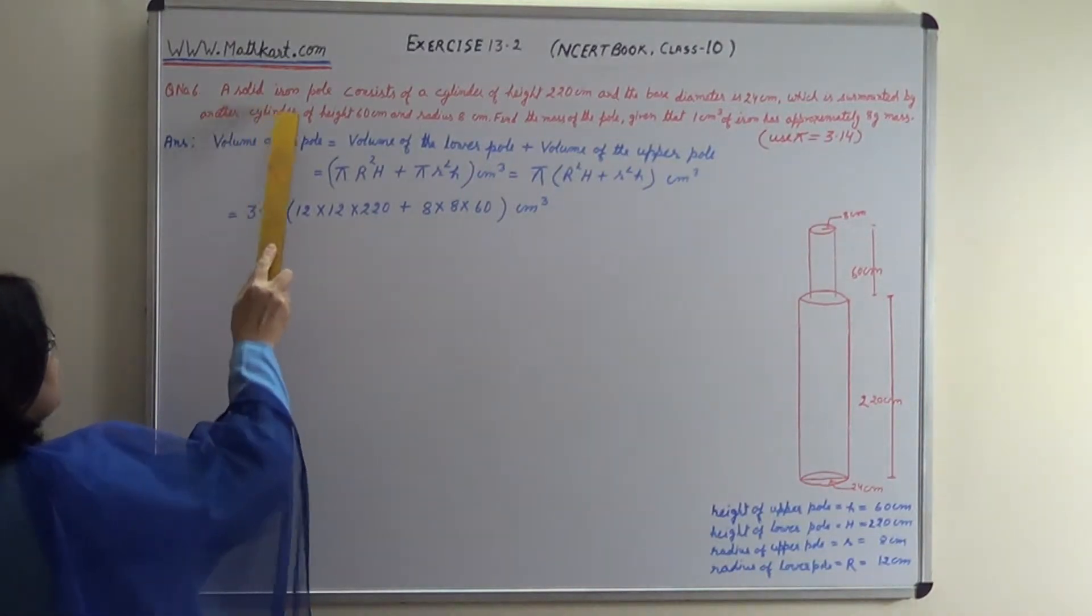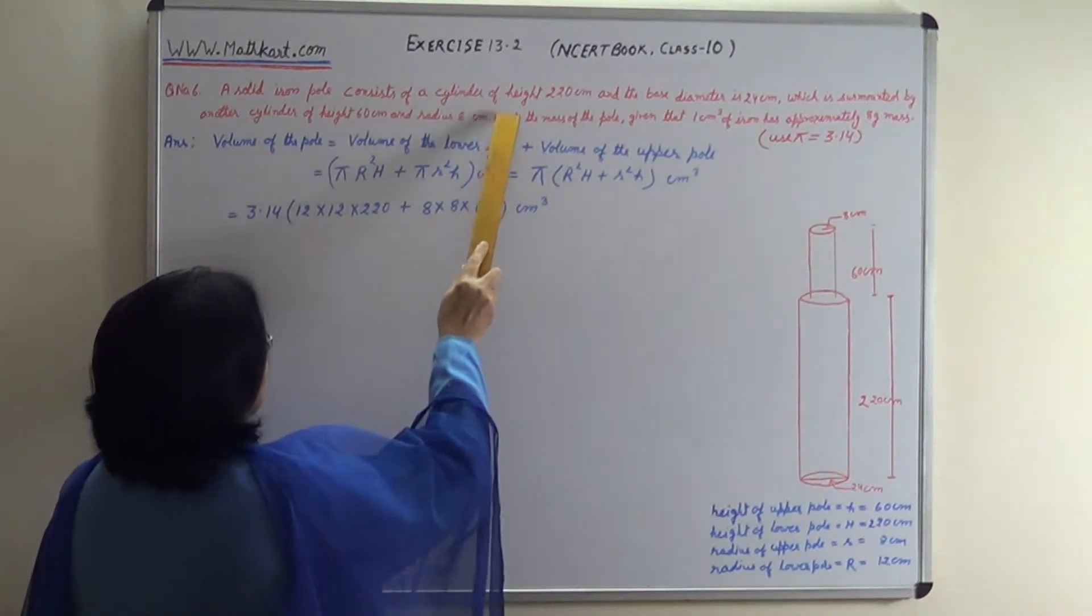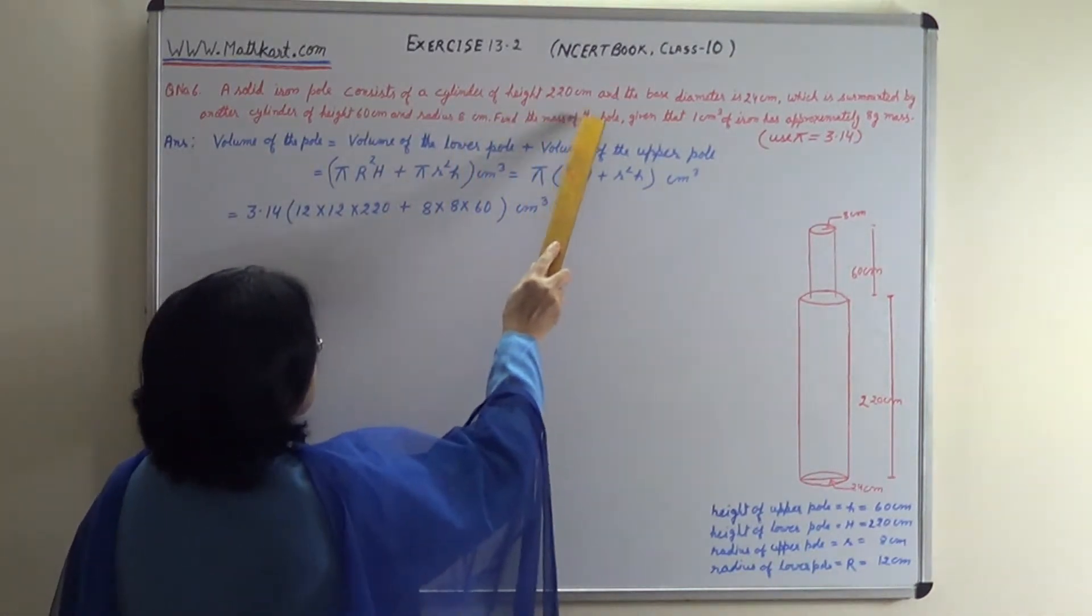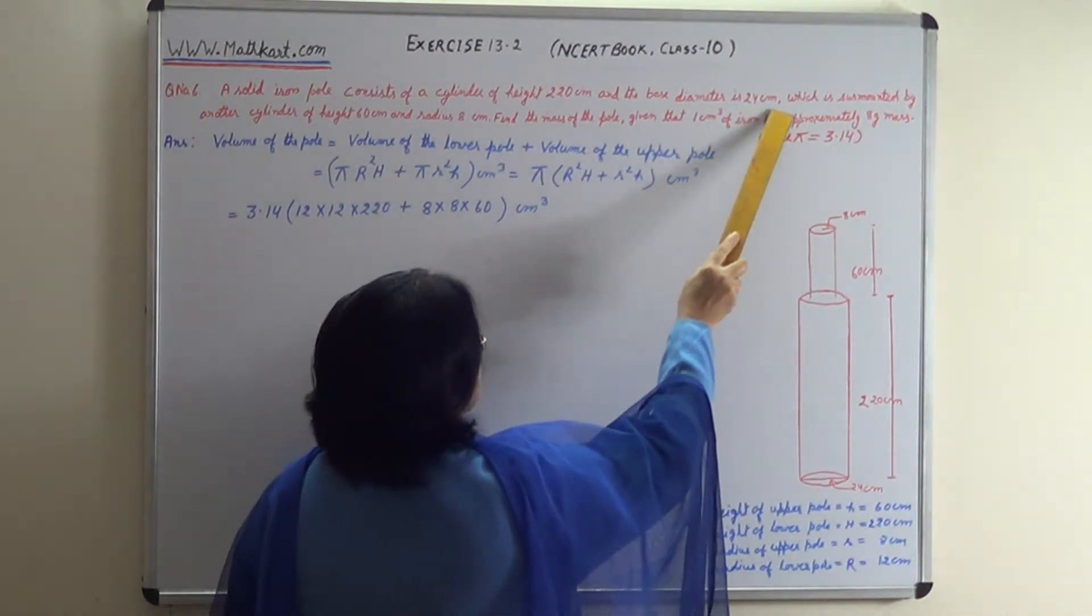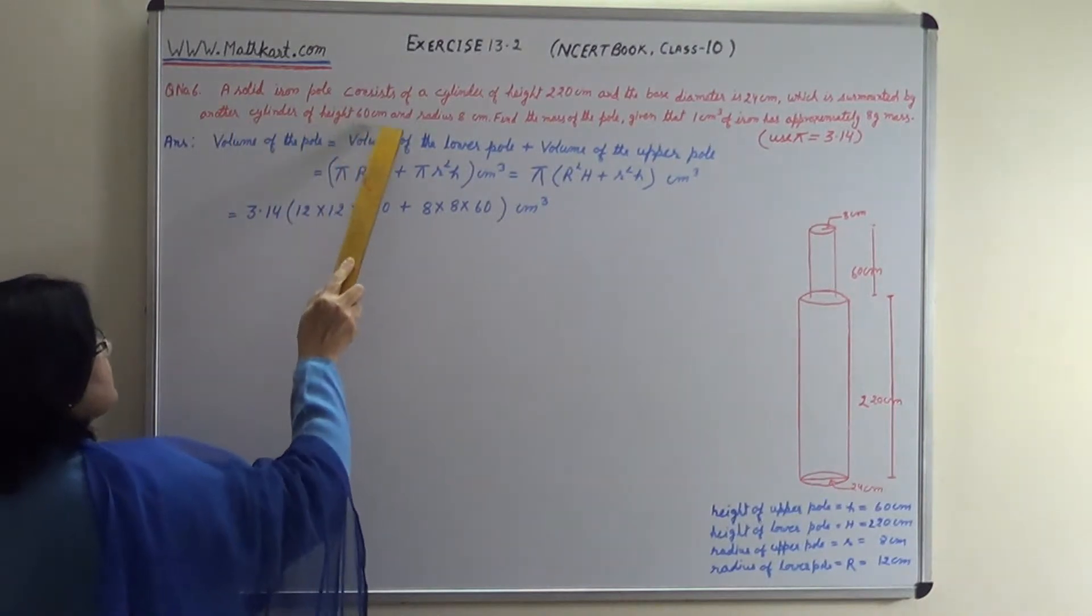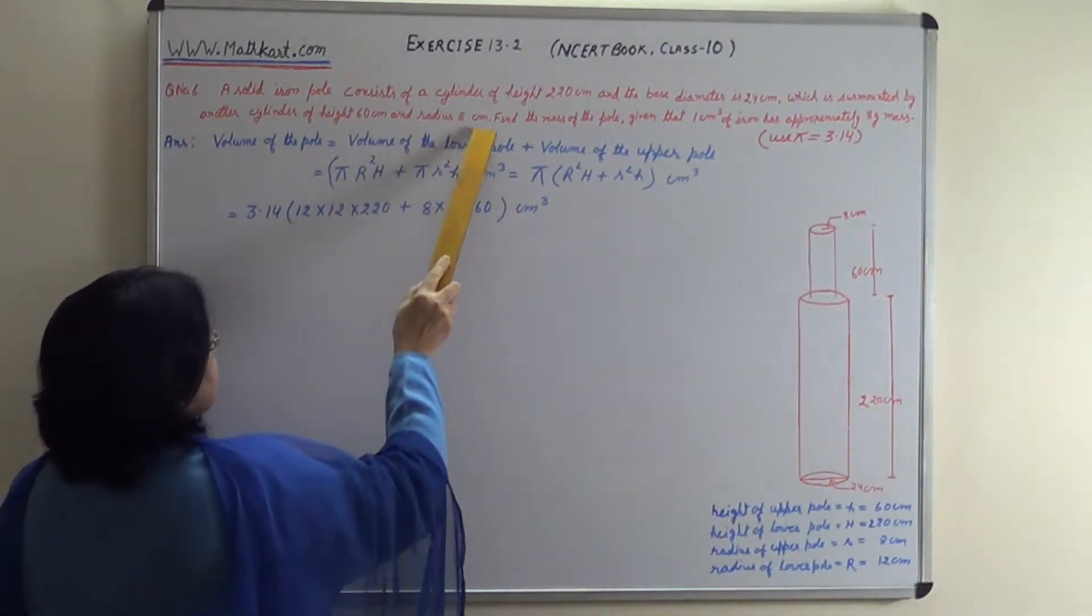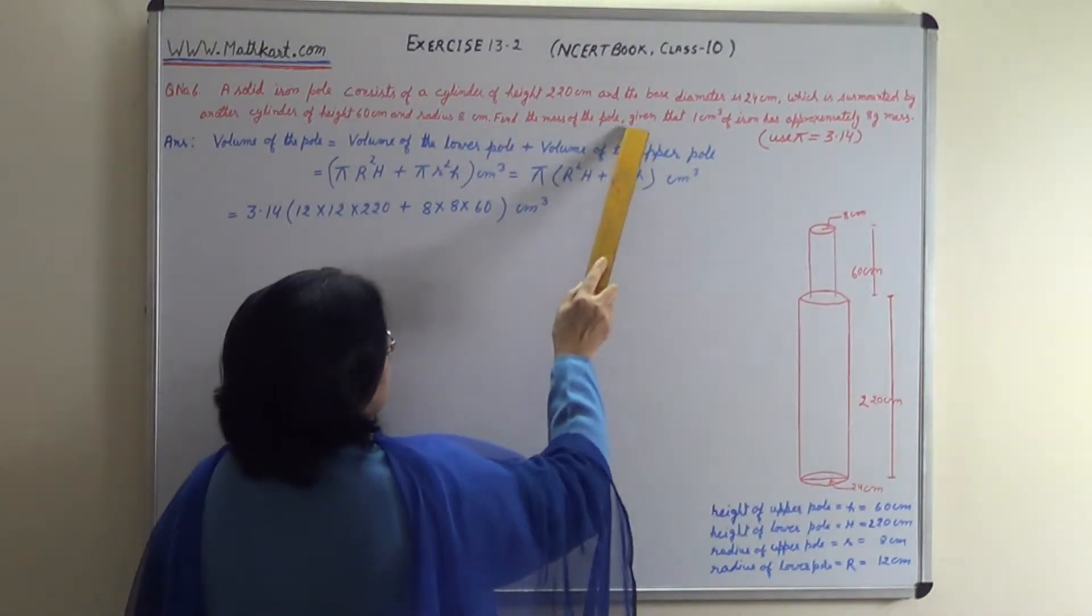A solid iron pole consists of a cylinder of height 220 cm and base diameter of 24 cm, which is surmounted by another cylinder of height 60 cm and radius 8 cm. Find the mass of the pole.